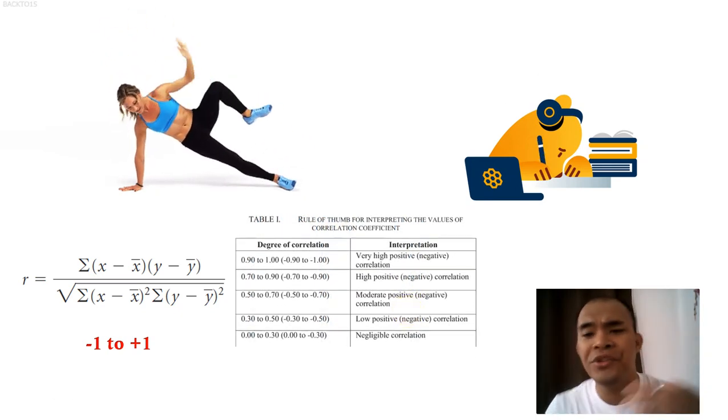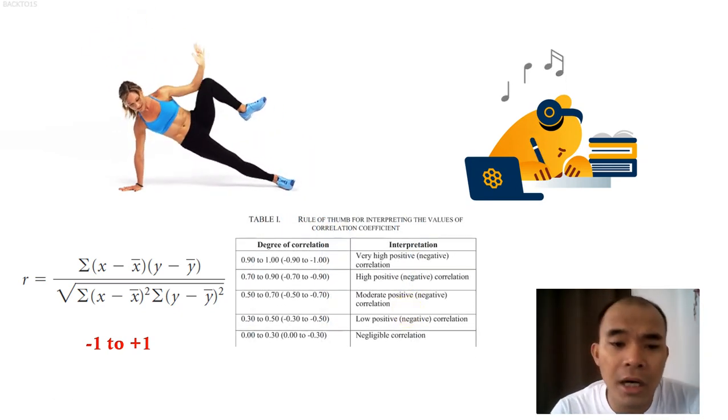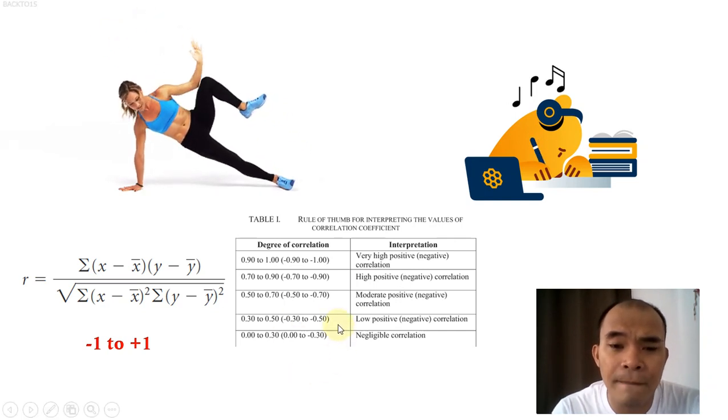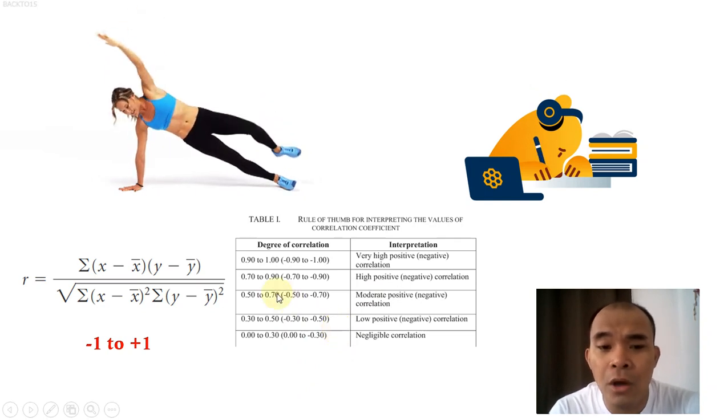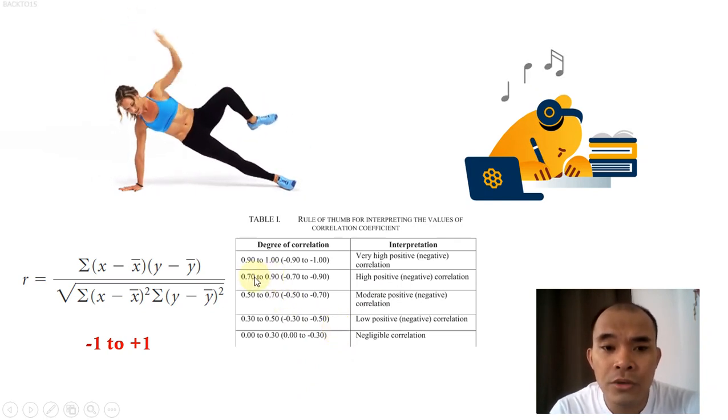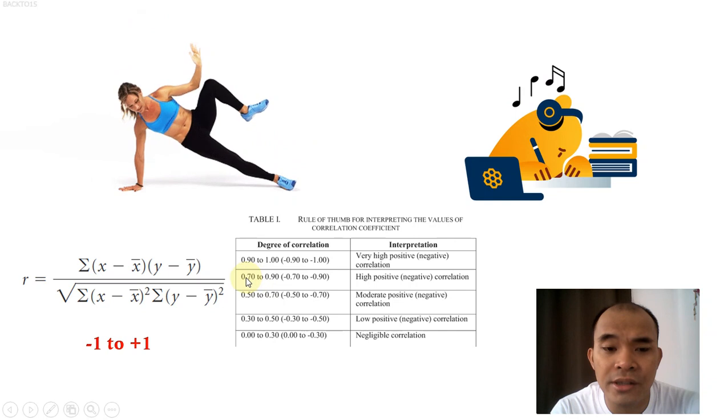So in order for us to interpret a certain value of our r, we can use this table here. For example, if the computed r is 0.85, positive 0.85, we have to look at these values here. So 0.85 is around here, so that is 0.7, which means that the two variables have high positive correlation.